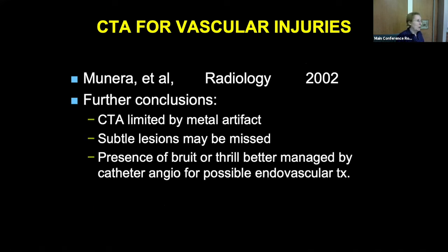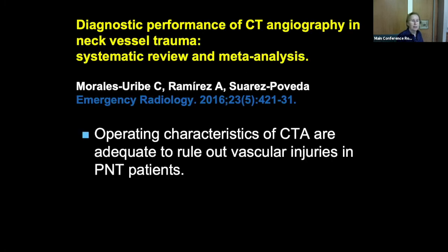Limitations of CTA: you're limited in gunshot wounds by streak artifacts. You can miss subtle lesions that aren't described, and some cases may be better managed by angiography because it can be therapeutic — CTA is only diagnostic. Morales-Uribe did a systematic review in 2016 and found that CTA operating characteristics are adequate to rule out vascular injuries. So we're pretty comfortable saying if it's a negative study for vascular injury, the patient doesn't have major arterial injuries.